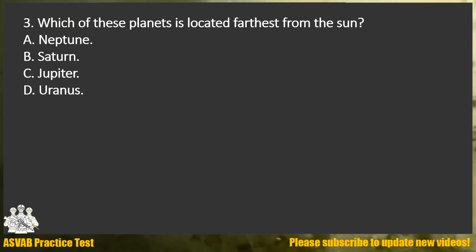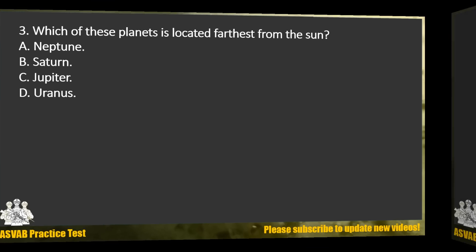Question 3. Which of these planets is located farthest from the sun? A. Neptune. B. Saturn. C. Jupiter. D. Uranus.